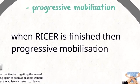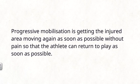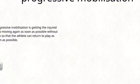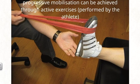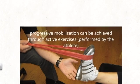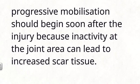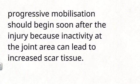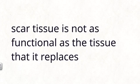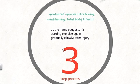When RICER is finished, progressive mobilisation starts. Progressive mobilisation is getting the injured area moving again as quickly as possible without pain, so that the athlete can return to play as soon as possible. It can be achieved through active exercises performed by the athlete, or through passive methods where the joint is manipulated by another person — usually a physio — and this is considered the best option. Progressive mobilisation should begin soon after the injury because inactivity can lead to increased scar tissue, which is not as functional as the tissue it replaces.